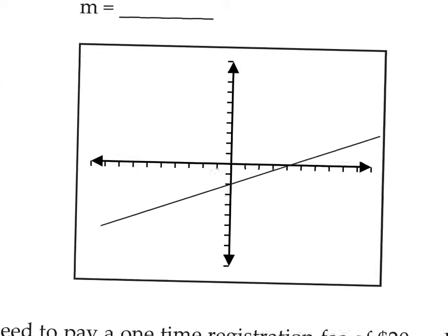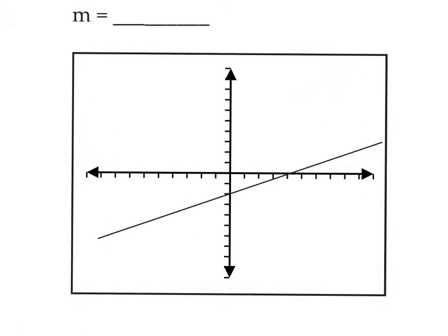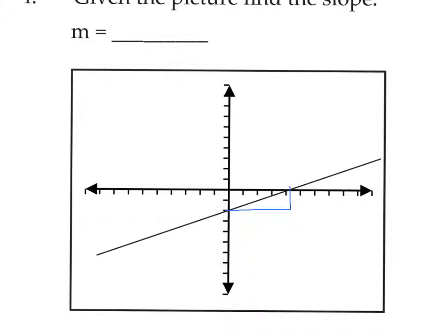On this fourth graph, I'm going to use my intercepts again. You can only use the intercepts if your line is actually crossing at a tick mark. Drawing a triangle between them, the rise is two and the run is four. So we have a fraction of two over four, which reduces to one half.